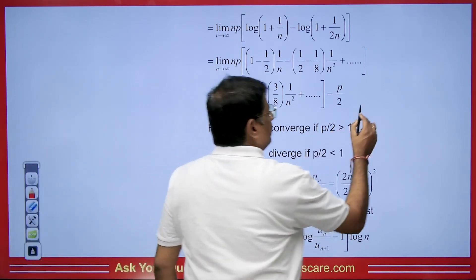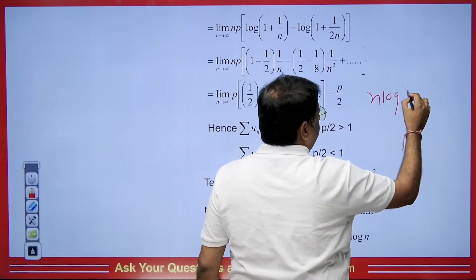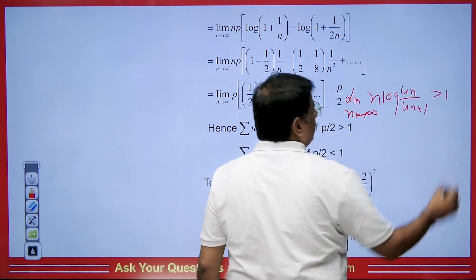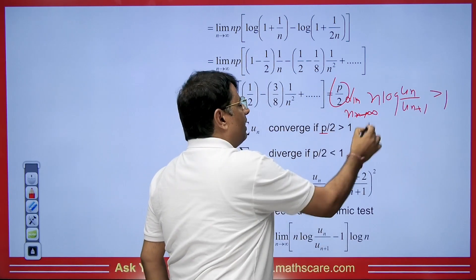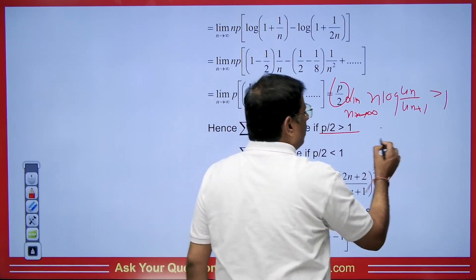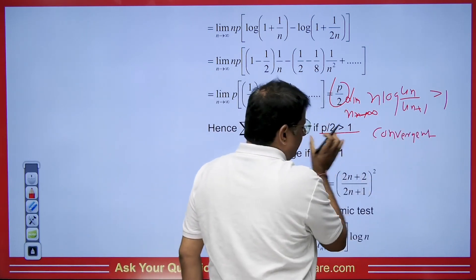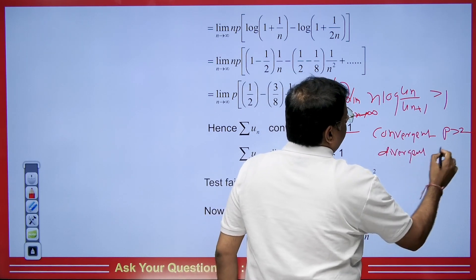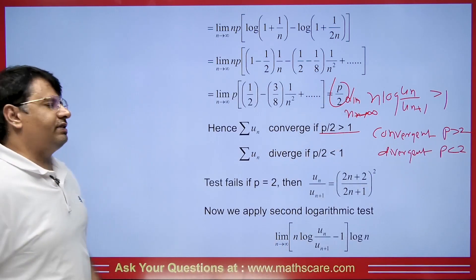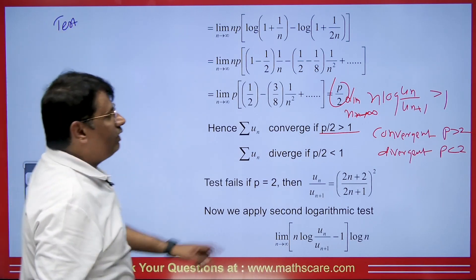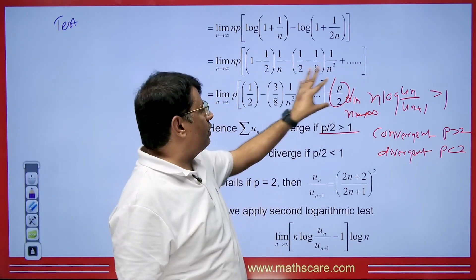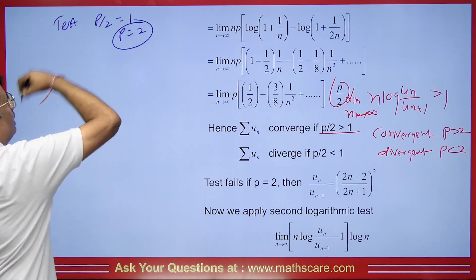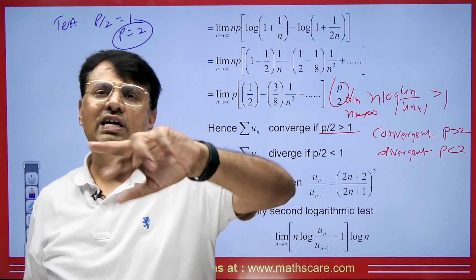If you have not watched the last video on the logarithmic test, you can watch it through the i-button. In the logarithmic test, when n·log(U_n/U_{n+1}) gives a value greater than 1, it is convergent — which means if p/2 > 1, i.e., p > 2, the series is convergent. It will be divergent when p < 2. The test fails when p/2 = 1, i.e., p = 2. So when the logarithmic test fails, we perform the second logarithmic test.